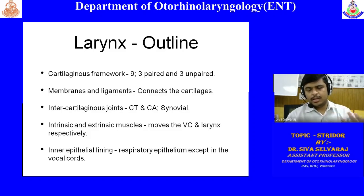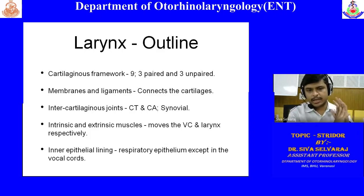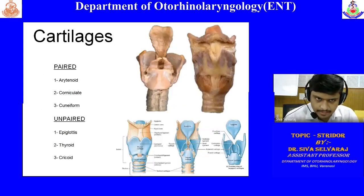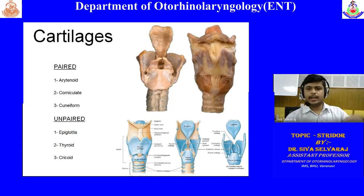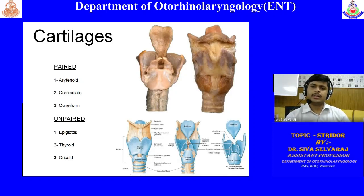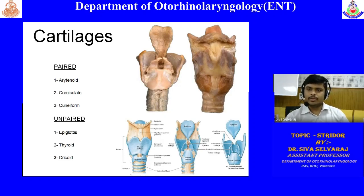The larynx has five components to study: skeletal framework (nine cartilages), membranes and ligaments (connecting cartilages), joints, muscles, and epithelial lining. The epiglottis is the first cartilage seen during indirect laryngoscopy. It is a leaf-shaped cartilage — mainly elastic cartilage with some hyaline components, making it fibroelastic cartilage.